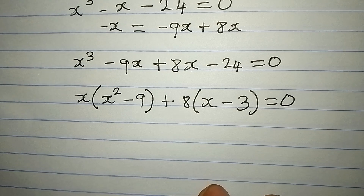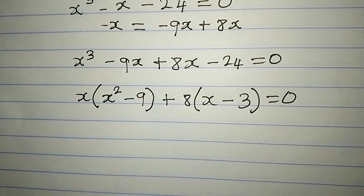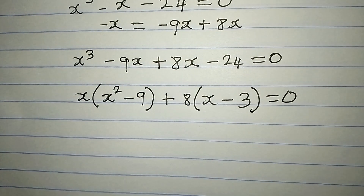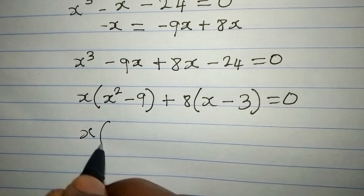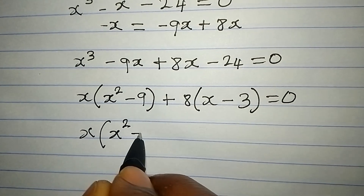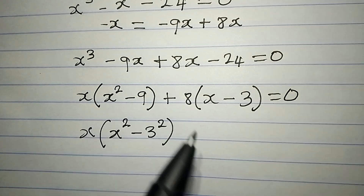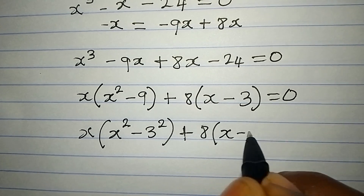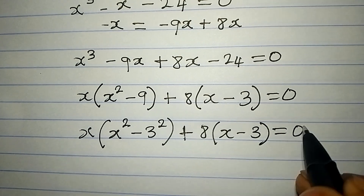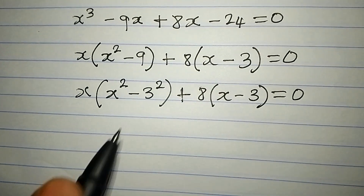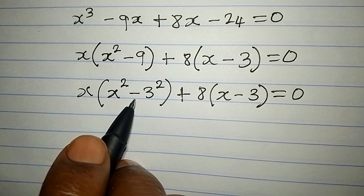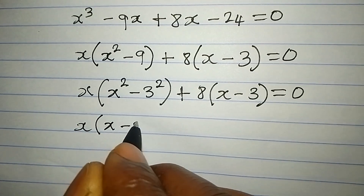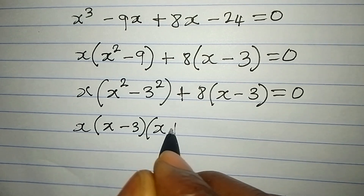Now we can break this down so that we have x² minus 9 in difference of two squares form. So we have x into bracket x squared minus 3 squared, plus 8 into bracket x minus 3, and this equals 0. Expressing the difference of two squares, we now have x into (x minus 3) into (x plus 3).